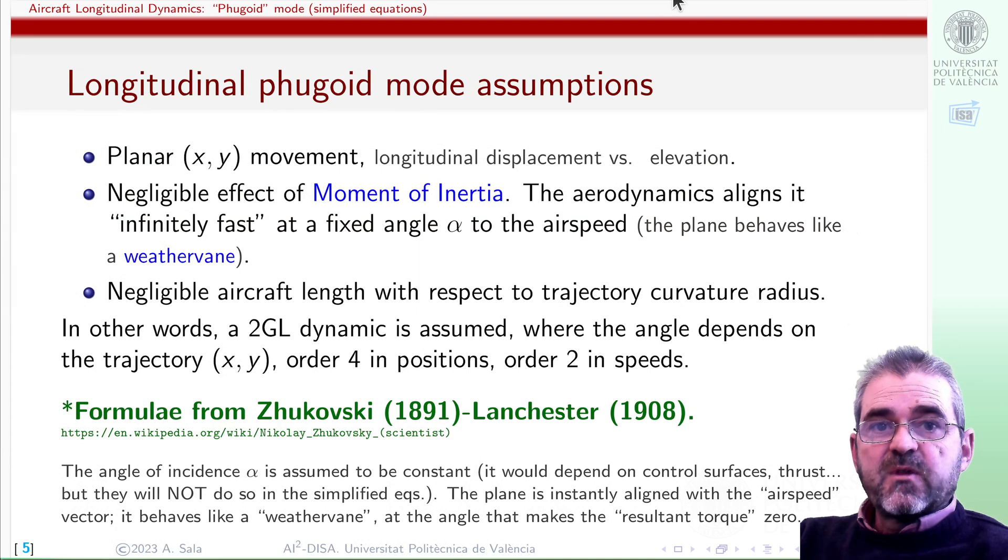In a previous video, we saw that under some assumptions, the most important of which was negligible rotational inertia, so the plane behaved like a weather vane, instantly aligning with the wind velocity vector, with the air speed vector.